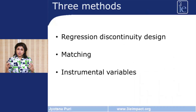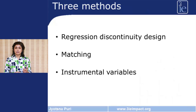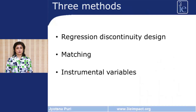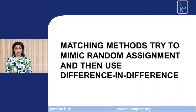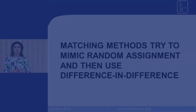There are three main kinds of quasi-experimental methods. These include regression discontinuity design, matching, and instrumental variables. In this presentation, I'm talking about the first two — regression discontinuity design and matching. But before I do that, I want to talk a little bit about difference-in-differences.